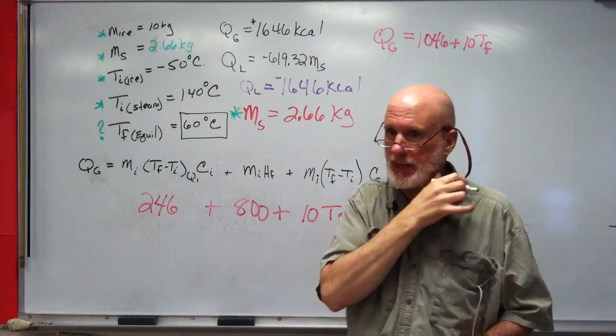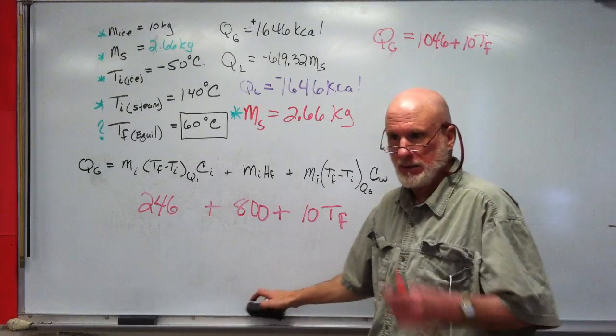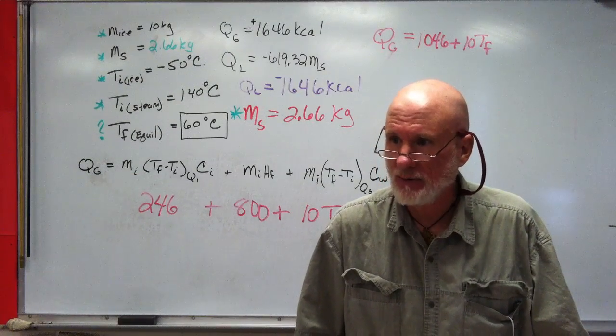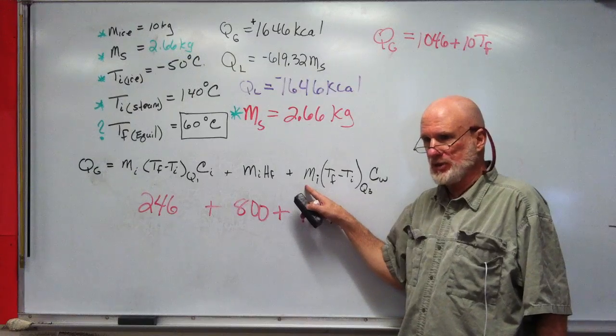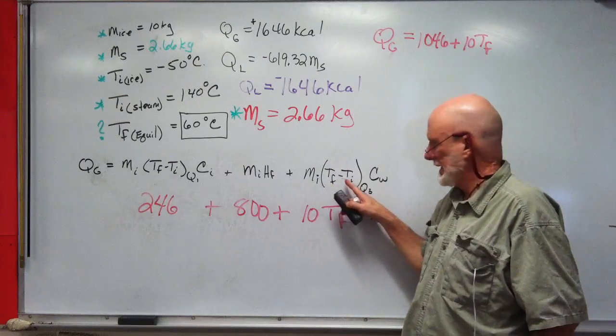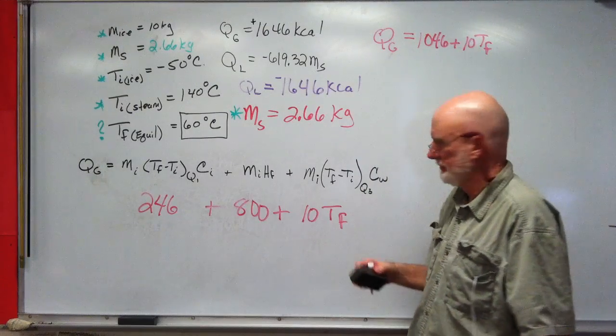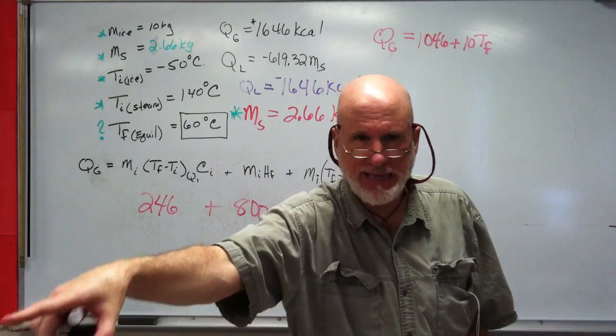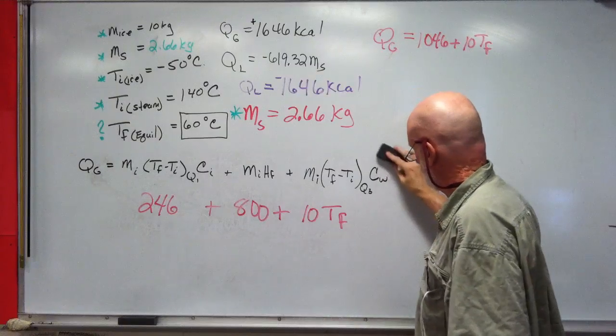So this is going to be 1046 plus 10 TF. Matthew, what do you do? The TI times by the CW, what is that, like zero? Zero, yeah. So it's just MI times—in other words, it's going to be the mass of the ice, which is 10. This is going to be TF minus zero. 10 times zero just drops out.